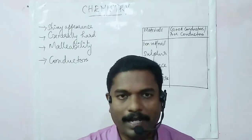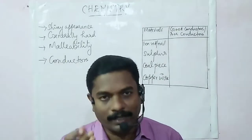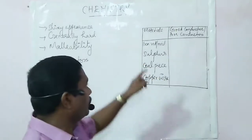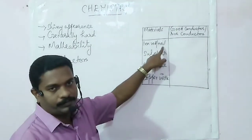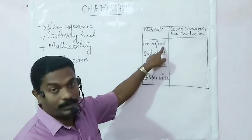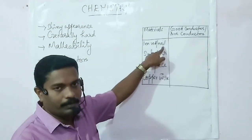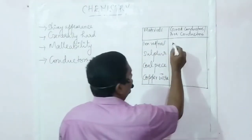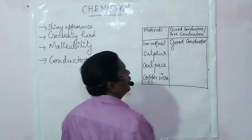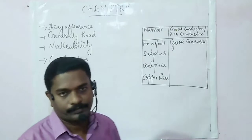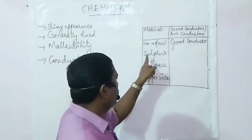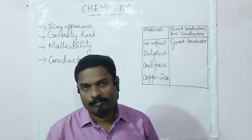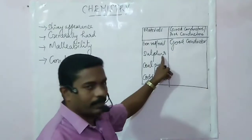Repeat the same activity using an iron rod instead of an iron nail. Let us tabulate the observations. For iron rod or nail, we observe the glowing of the bulb. From this we infer that iron rod or iron nail can act as a good conductor of electricity. Now change the iron nail and connect a sulphur roll — you will see no glowing of the bulb. So we record sulphur as a poor conductor.